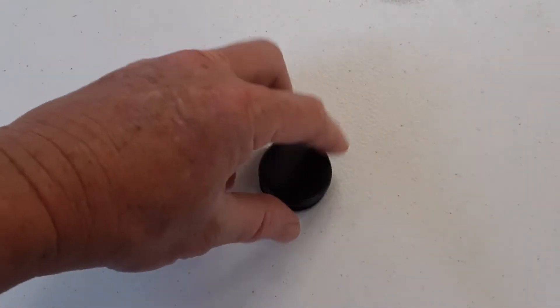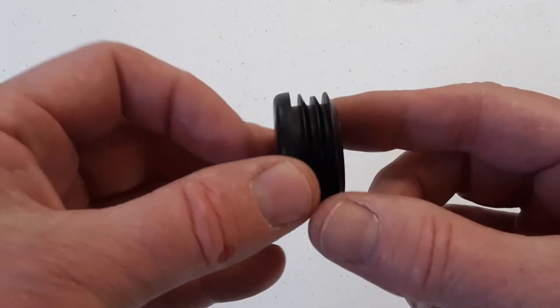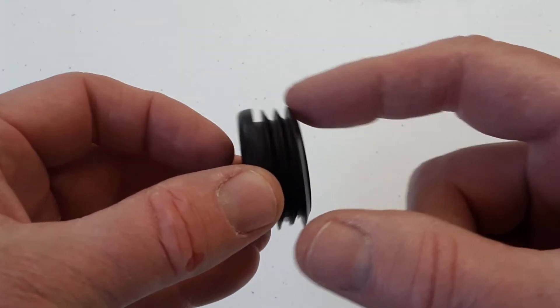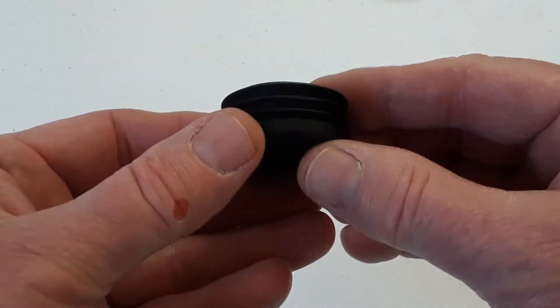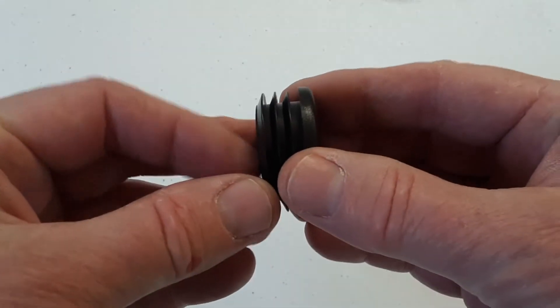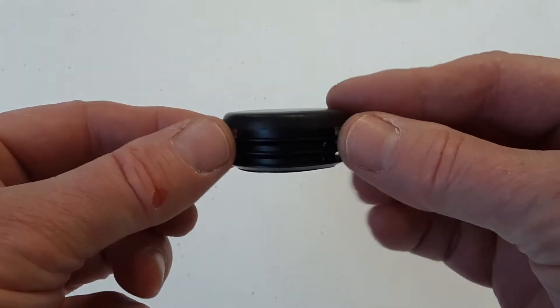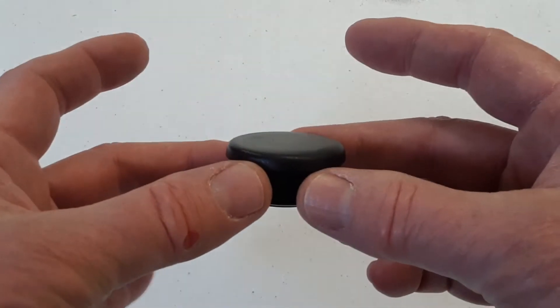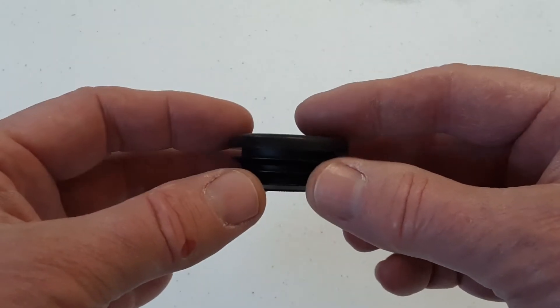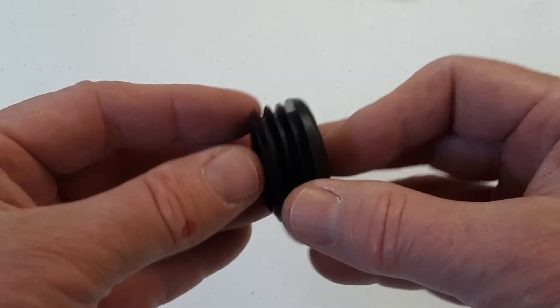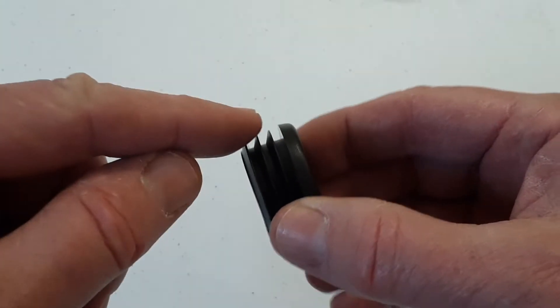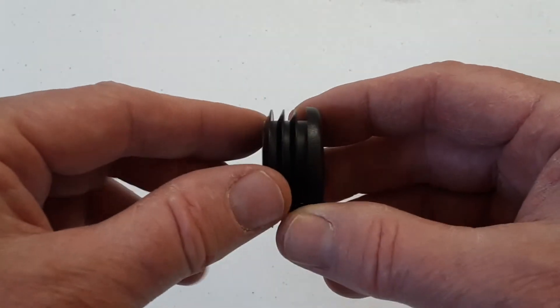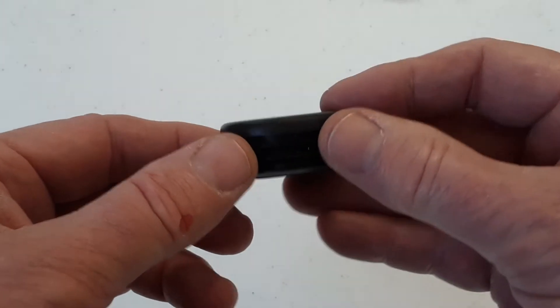So the first thing I'm going to do is take a heat gun and heat up these little fins to make them more flexible so they will form inside the scupper hole. Now you've got to be careful because you don't want to melt this because then it's going to stick to your scuppers. So what you're going to do is just heat it up and you're going to see these fins start to get shiny. That means they're going to be more pliable.